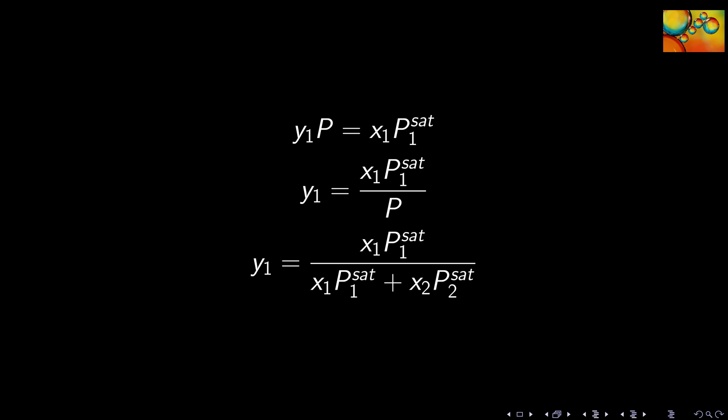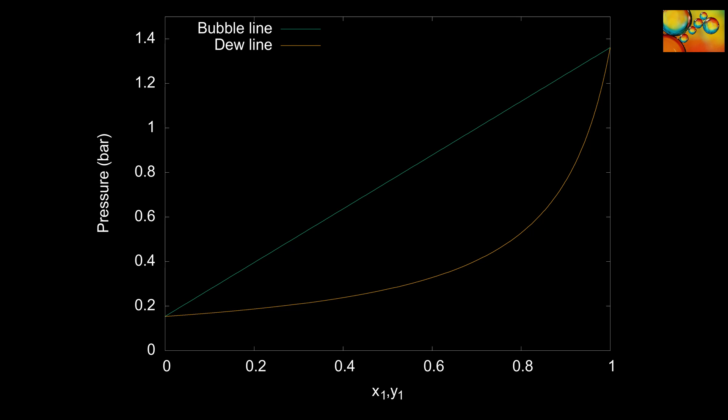Also, according to Raoult's law, the mole fraction of a component in the vapor phase times the system's pressure is equal to the mole fraction of that component in the liquid phase times its vapor pressure. If we know the pressure of a system, we can use this equation to obtain an expression for the mole fraction of component one in the vapor phase. The results of such calculations allow us to plot the yellow line in the diagram, which we call the dew point line.